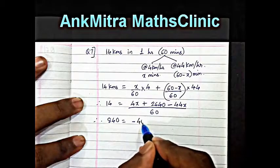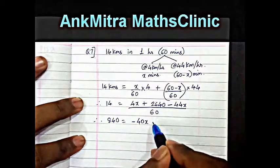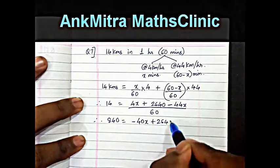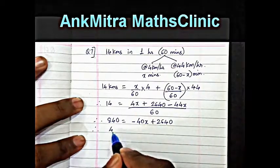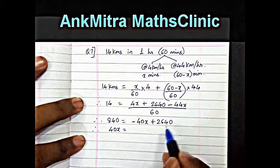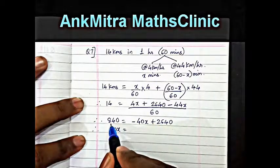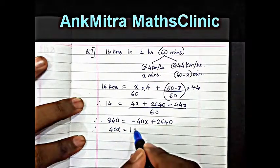minus 40x plus 2640. Therefore, rearranging the terms, we get 40x is equal to 2640 minus 840, which comes to 1800.